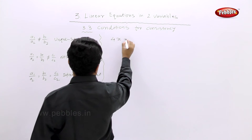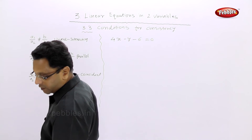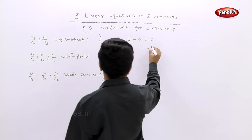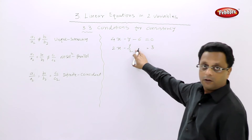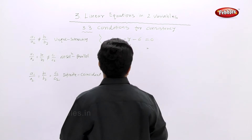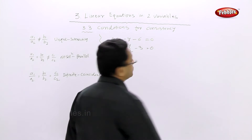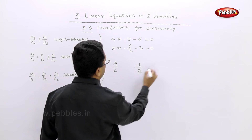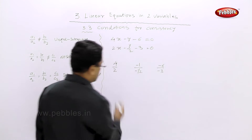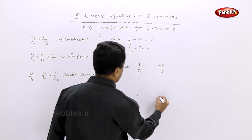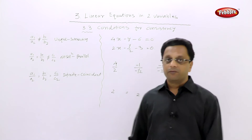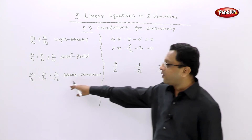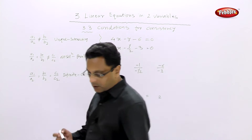Next: 4x − y − 6 = 0 and 2x − y/2 − 3 = 0. We check a1/a2 = 4/2 = 2, b1/b2 = (−1)/(−1/2) = 2, and c1/c2 = (−6)/(−3) = 2. All three ratios are the same, so a1/a2 = b1/b2 = c1/c2. Therefore these equations have infinitely many solutions and the lines are coincident.